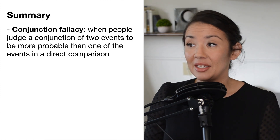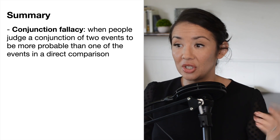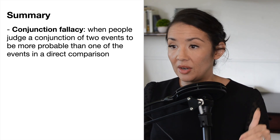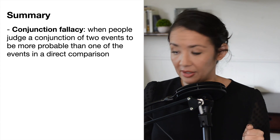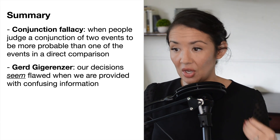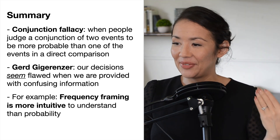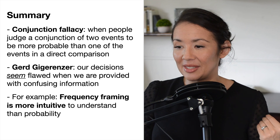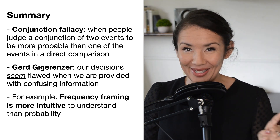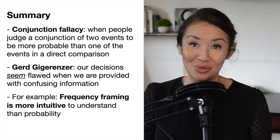Summary: there is a conjunction fallacy, which is when people judge a conjunction of two events to be more probable than one of the events in a direct comparison. Gigerenzer proposed that our decisions seem flawed when we are provided with confusing information. Frequency framing is more intuitive to understand than probability framing, and one of the best ways to communicate frequency framing is with visualizations.